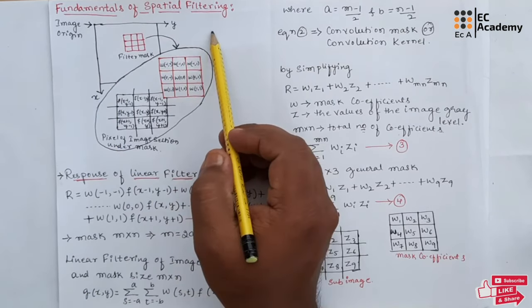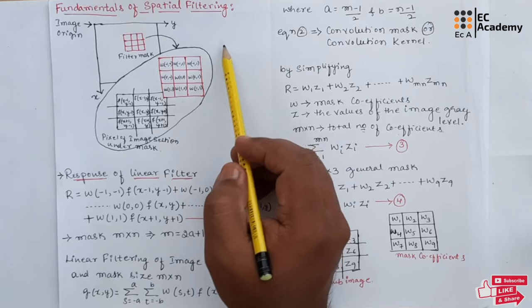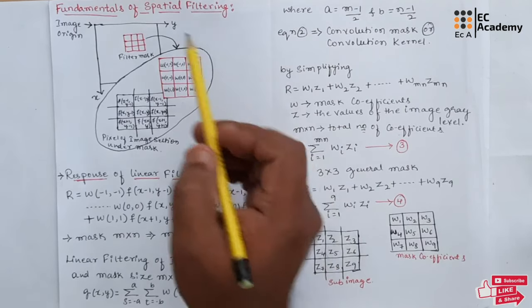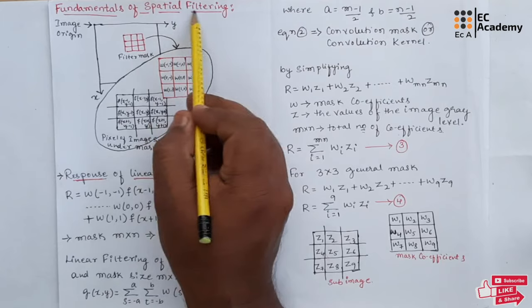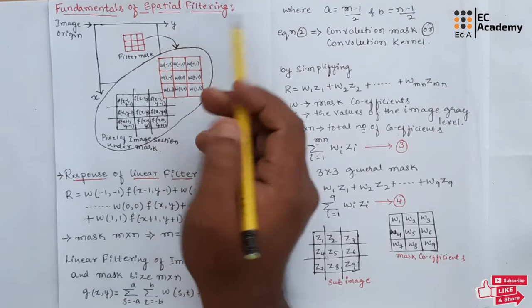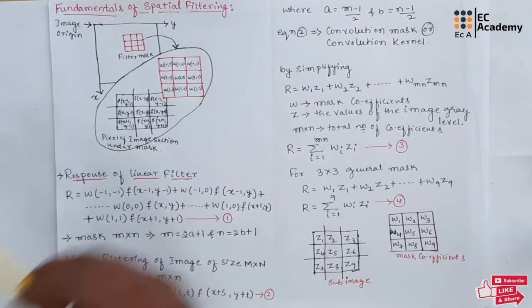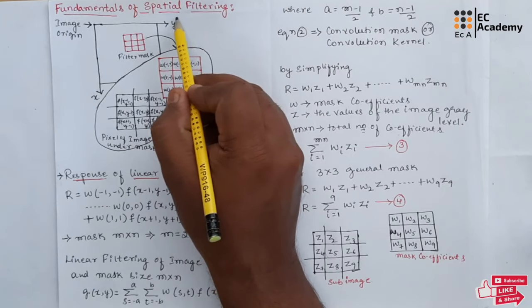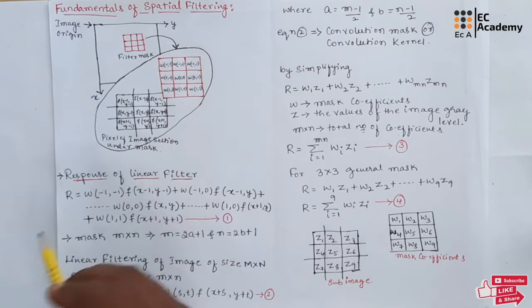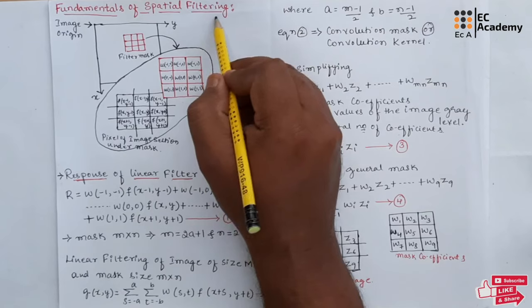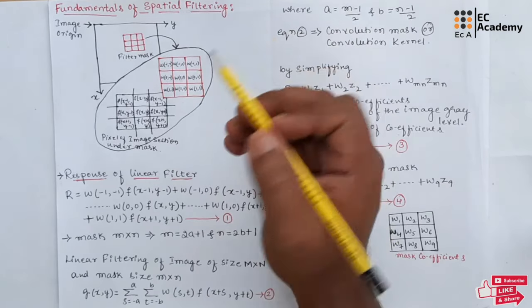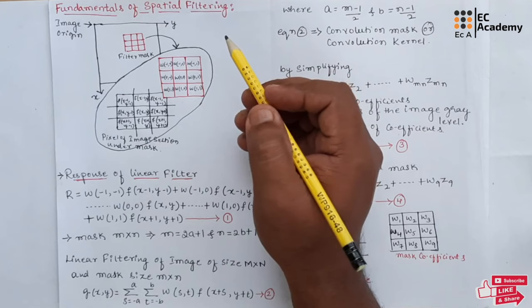Spatial filters are one of the principal tools used for image processing. They are generally used for image enhancement. Here, filter refers to passing or rejecting some frequency component.